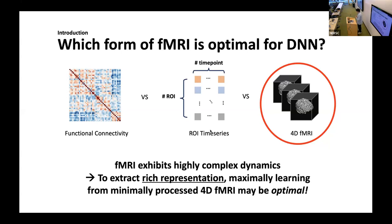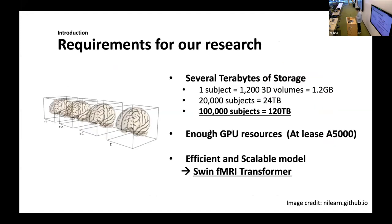Therefore, we expect that our model can extract rich representations from minimally processed fMRI datasets. However, this approach has three requirements. First, we have to prepare 120 terabytes of storage to load 100,000 fMRI scans. In addition, it requires many GPU resources since our model size should be able to accommodate a large amount of fMRI data. These two requirements are satisfied by the support of NERSC.